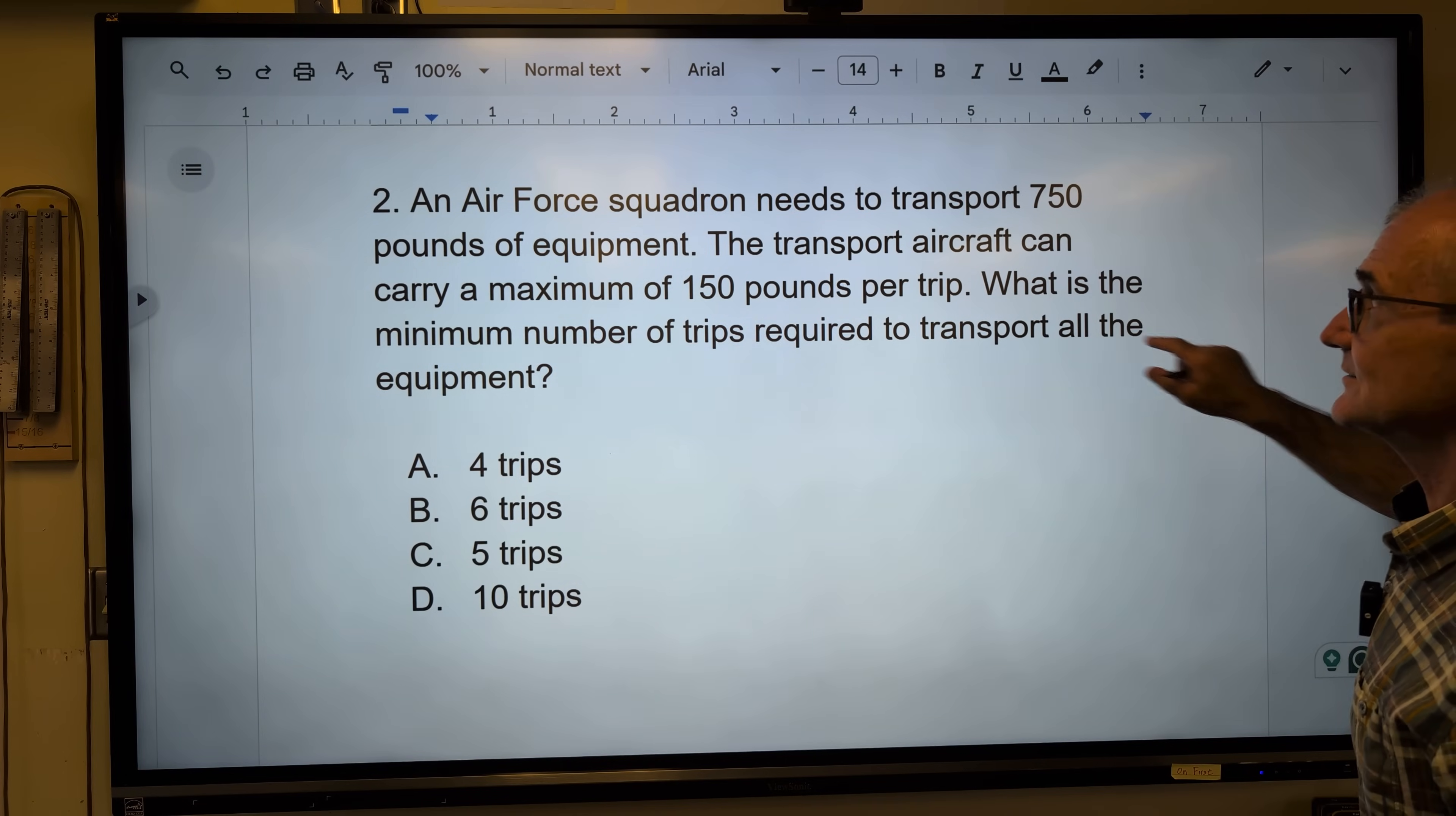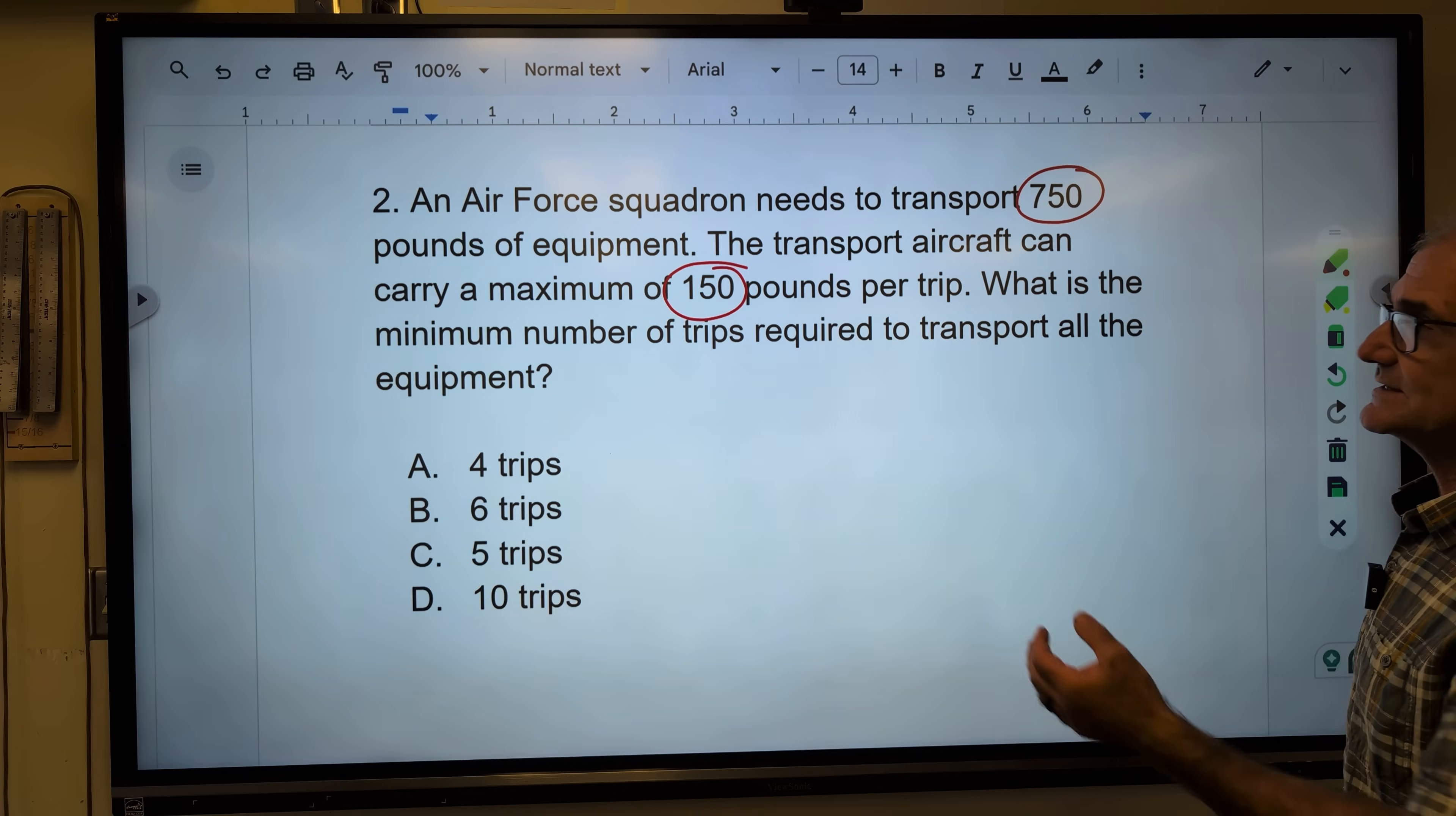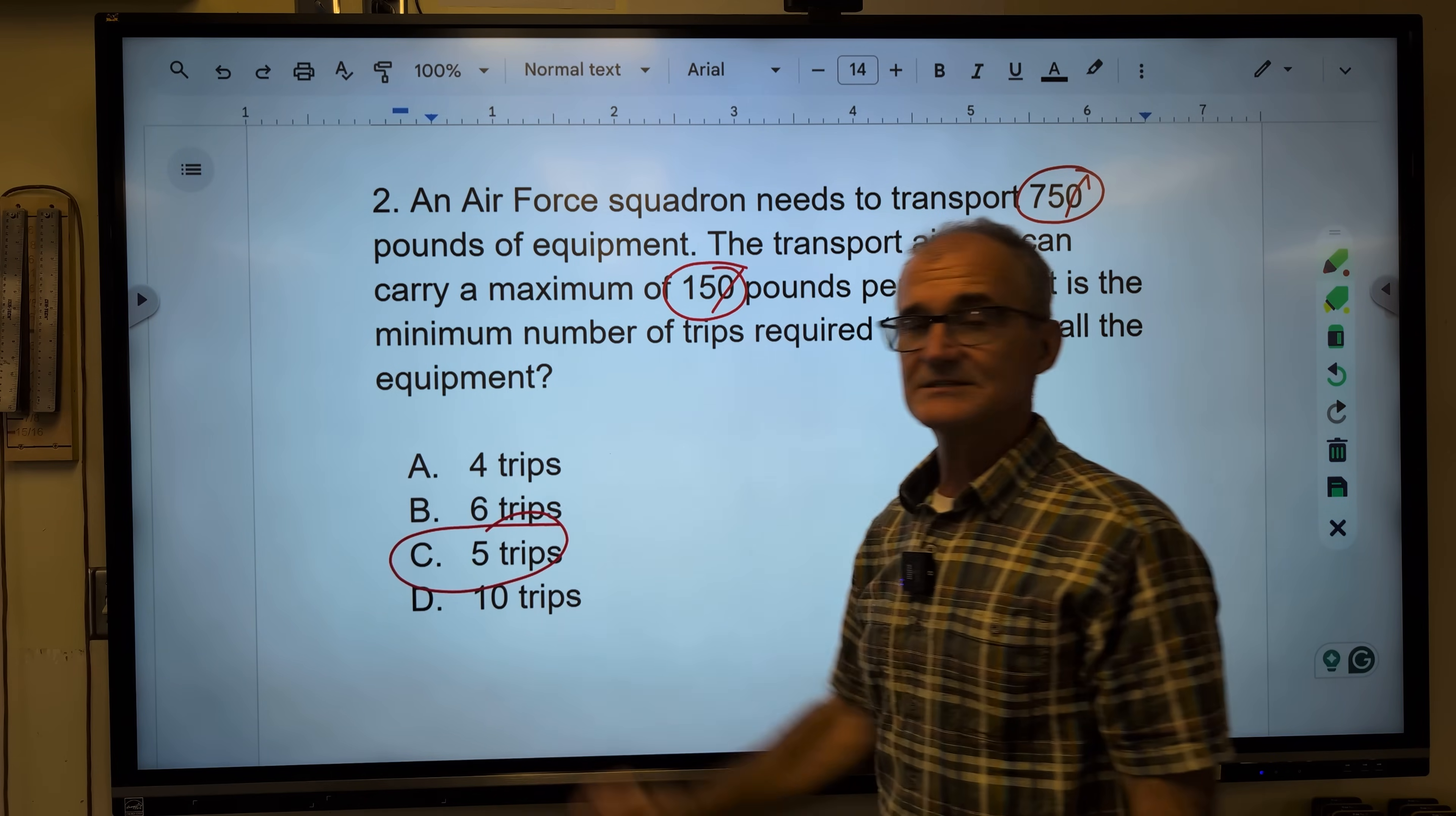Let's move on to the next one. Air Force Squadron needs to transport 750 pounds of equipment. The transport can carry 150 pounds per trip. What is the minimum number of trips to transport all of it? First thing I'll do is I'll just drop a zero off of each. I have 750 max. This amount per trip, so it's going to be 75 divided by 15. Five trips, answer C right there.